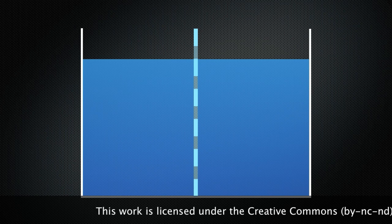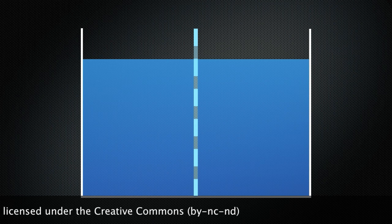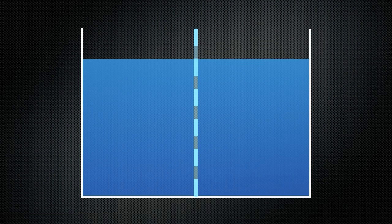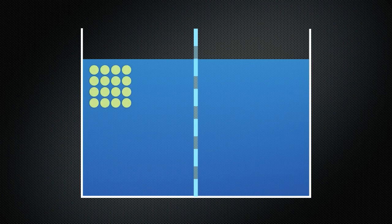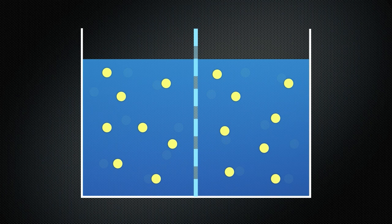Now let's look at a different situation where there are two compartments separated by a semi-permeable membrane. A semi-permeable membrane allows water and small particles to cross but, like a sieve, it stops larger particles from getting through. We add some small particles to one compartment and they diffuse throughout that compartment. If they are small enough to cross the membrane, then they will diffuse into the other compartment as well, eventually reaching a steady state with equal concentrations on either side.